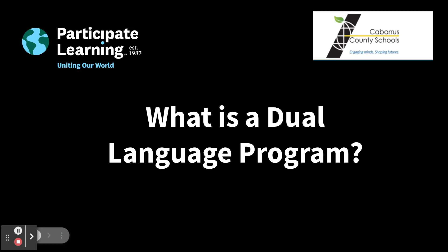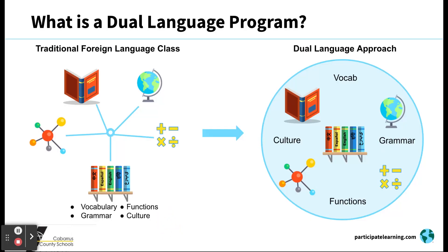What is a dual language program? The image on the left shows how a traditional high school foreign language class approaches learning a language — learning a foreign language is often done in isolation. The right image shows how both literacy and content are taught in immersion. As a result, students internalize the grammar, vocabulary, functions, and culture, and develop other cognitive benefits in depth. Learning content through language and language through content: Spanish is the vehicle for instruction, not the subject of instruction.